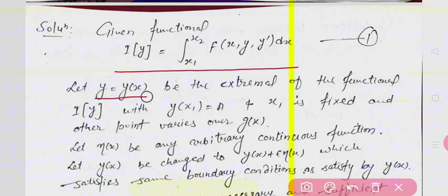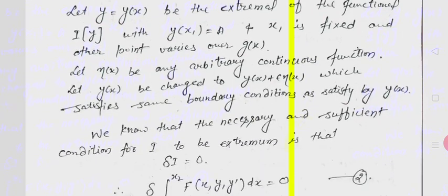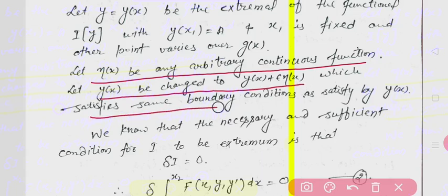We assume y to be the extremum of the functional I, where y(x1) = a, and x1 is fixed while x2 is the other point varying over the curve g(x). Let eta(x) be any other arbitrary continuous function, and we assume y(x) changes to y(x) + epsilon * eta(x), which satisfies the same boundary conditions as y.